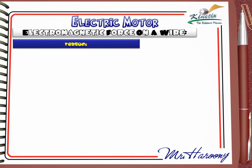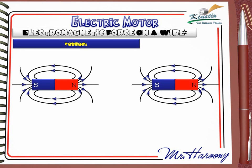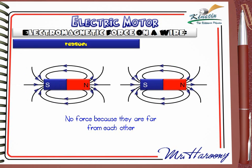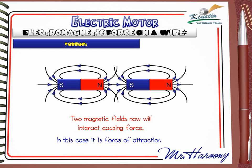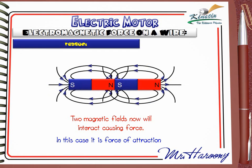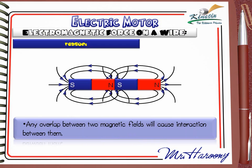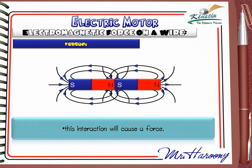A better approach is to study a similar case: two magnets. As long as they are far from each other, no force acts between them. As they get closer, at a certain moment the two magnetic fields overlap. Once they overlap, interaction between the two magnetic fields takes place, causing a force — in this case, a force of attraction. This is a simple experiment you can do at home.